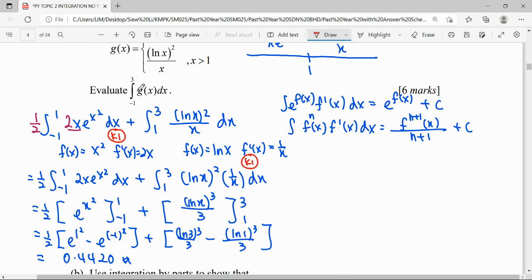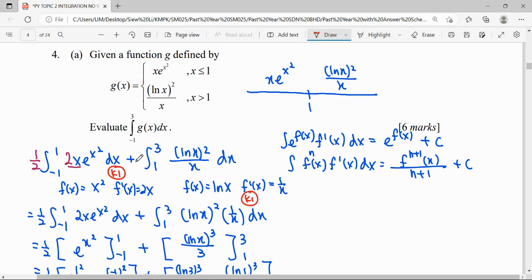And then don't forget, when we integrate negative 1 until 3, we have changing function. So the first step, state the question correctly, which is negative 1 until 1 for this function, 1 until 3 for this function. So this is the first step.